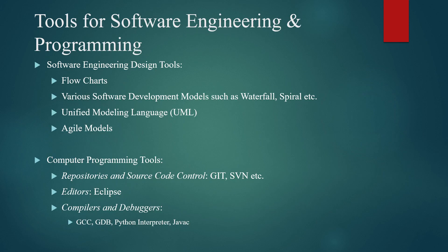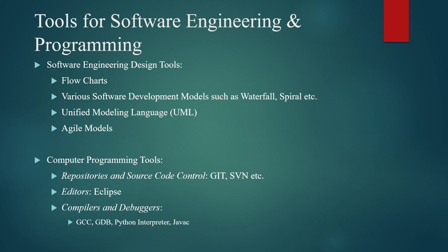Your software should have a clear primary purpose, and additional features can be added on top of that. To create a wonderful software engineering artifact, you need a set of tools: flowcharts, understanding of different models such as the waterfall model and spiral model, UML (Unified Modeling Language) to represent requirements in understandable form for developers, agile models for development, and programming tools and repository tools such as Git to store and share code. Editors like Eclipse, and compilers to debug and write code, are also essential.